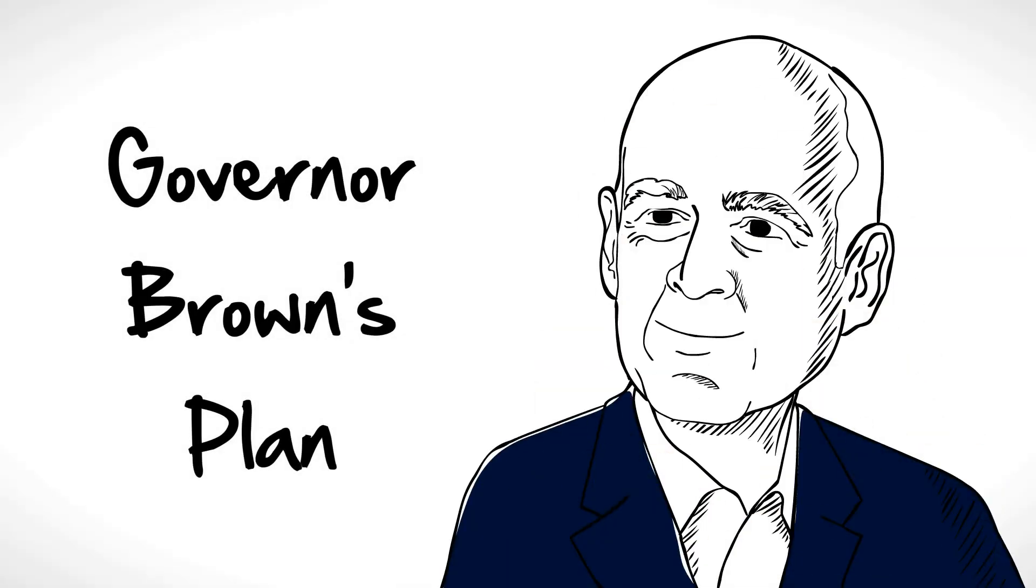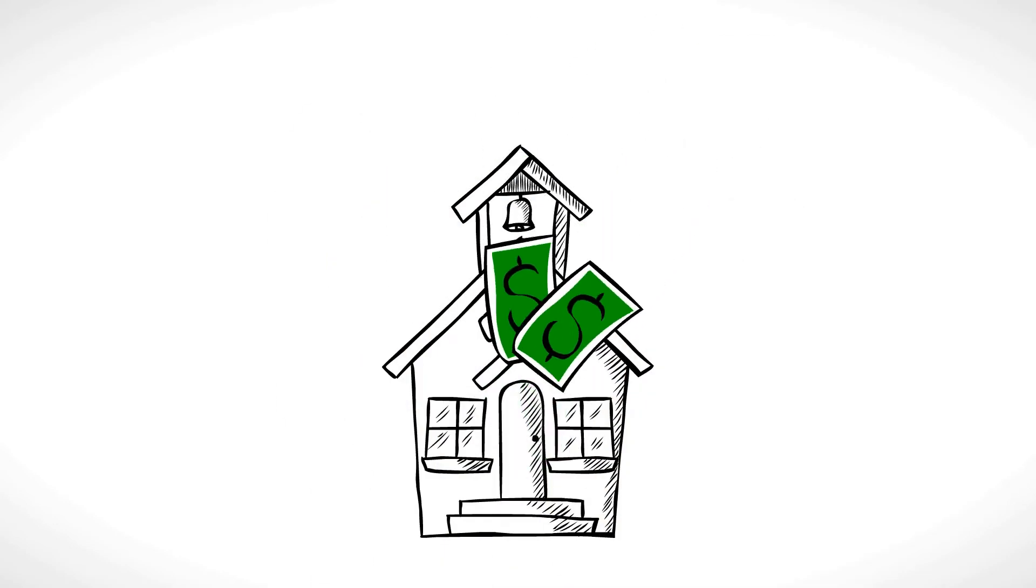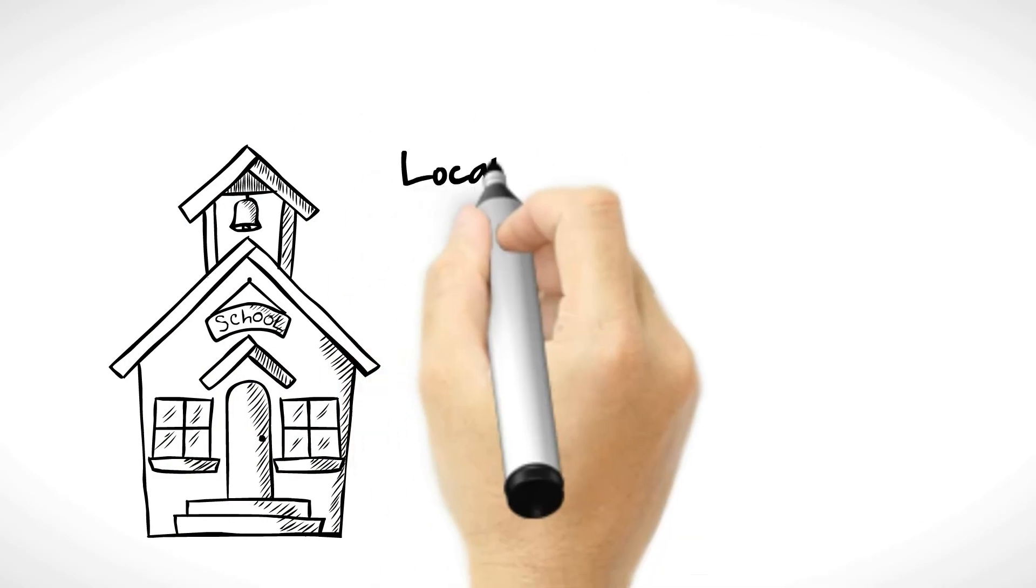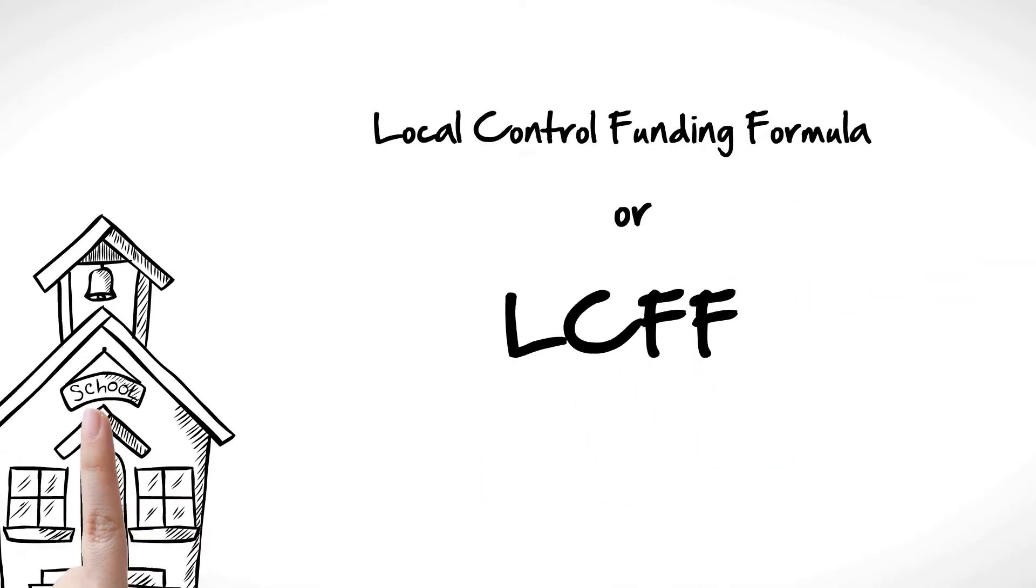The governor has a plan to fix these funding problems. He wants to improve the way we fund schools. The plan is called Local Control Funding Formula, or LCFF. The plan does the following.